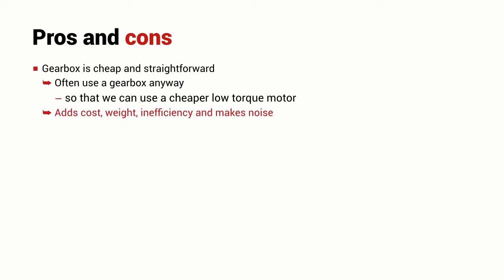What are the pros and cons of these different techniques? A gearbox is cheap and straightforward. Oftentimes, we use a gearbox in a robot anyway so that we can use a cheaper low torque motor. Gearboxes do add cost and they add weight and they do add some inefficiency and they make noise.